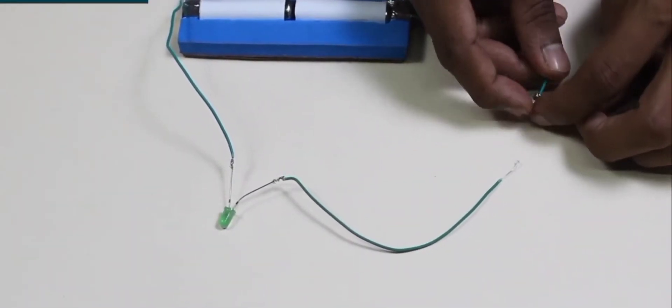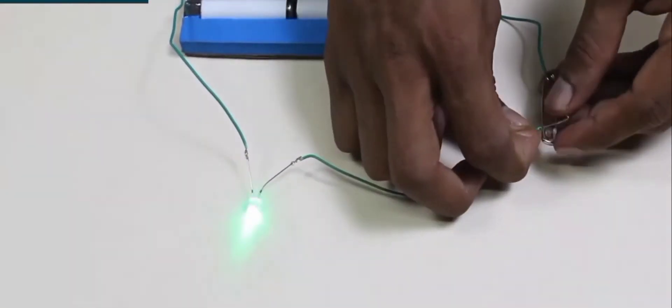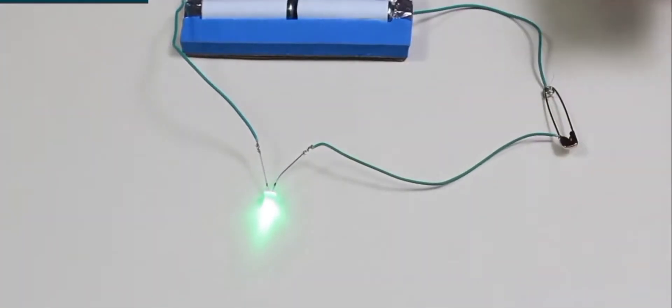The safety pin is made up of stainless steel and will act as the switch. As the circuit is complete, we can clearly see that the bulb starts glowing.